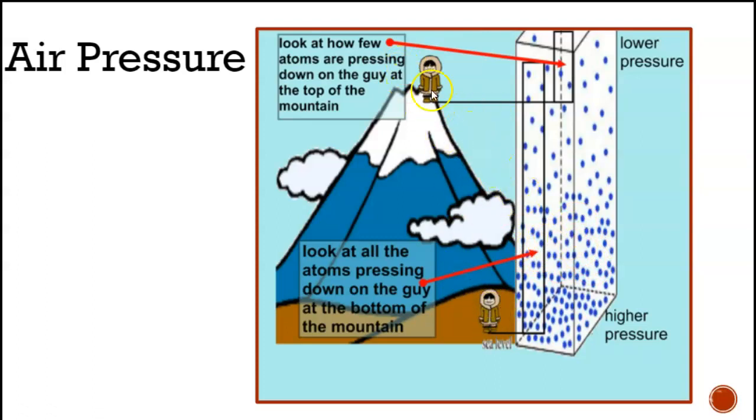So you notice you've got these two little dudes here. One on top of the mountain. And it says, look at how few atoms are pressing down on the guy at the top of the mountain. So, of course, there's lower pressure. Less atoms pushing down.